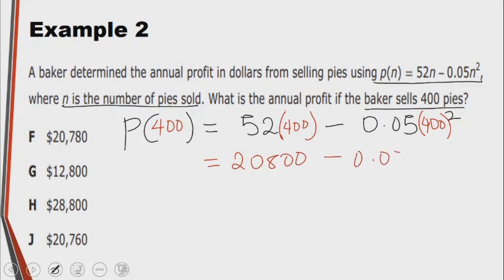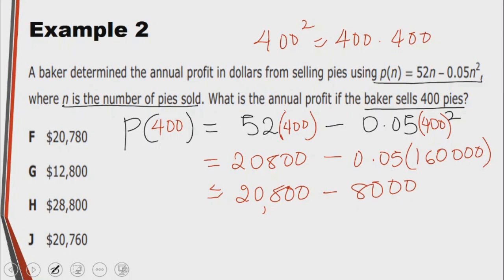And 0.05 multiplied by, 400 raised to the power of 2 is 400 multiplied by another 400. That will give us 160,000. Now we need to simplify further. We have 20,800 minus 8,000. So the annual profit after this baker sells 400 pies is going to be $12,800. The answer is G.